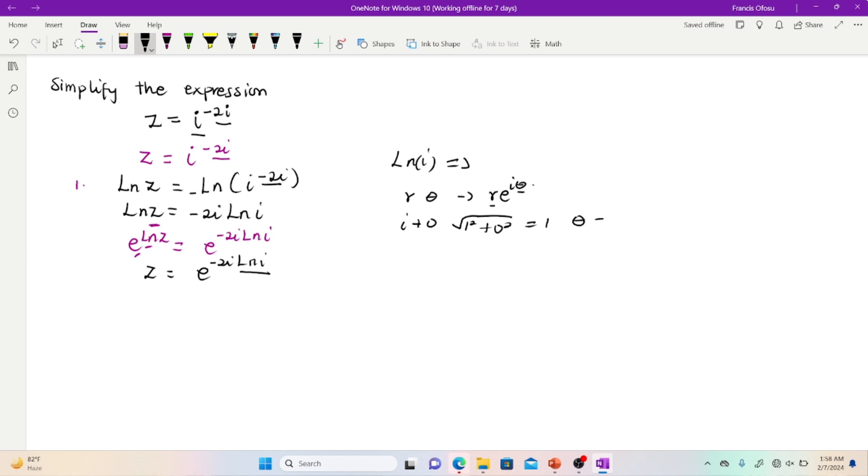Then theta is simply equal to the tan inverse of the coefficient of the imaginary. Here, the imaginary is 1 over the real part, which is 0. Then tan inverse of this expression is equal to π on 2.